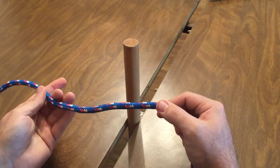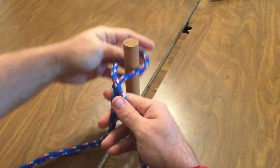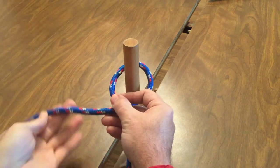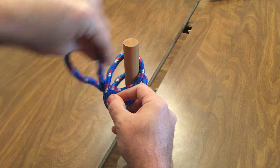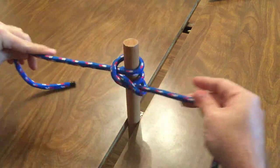Also on an open ended object or pole, you can twist the rope as if you're tying an overhand knot and then place it over the pole. Then repeat this one or more times and tighten by pulling the two ends of the rope.